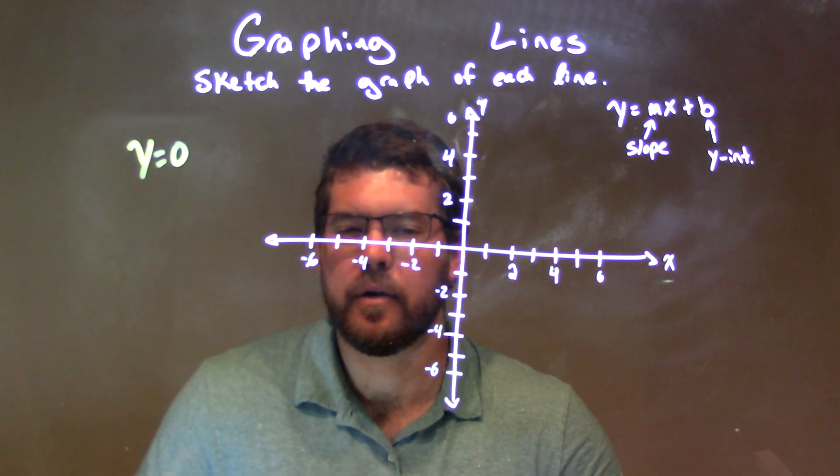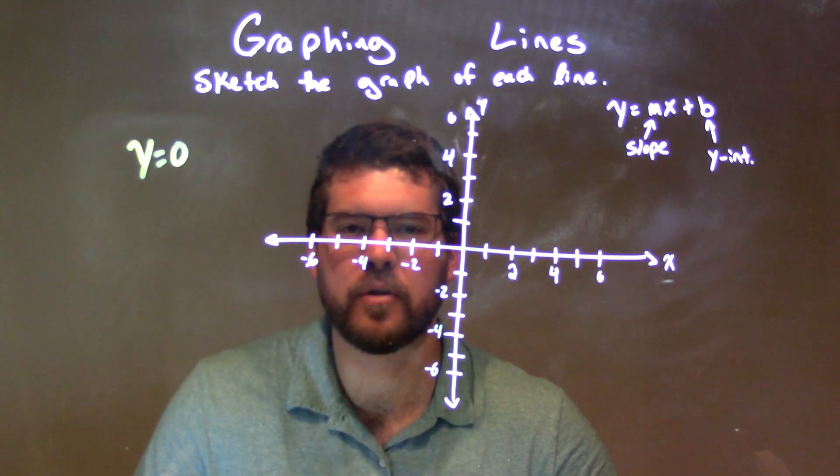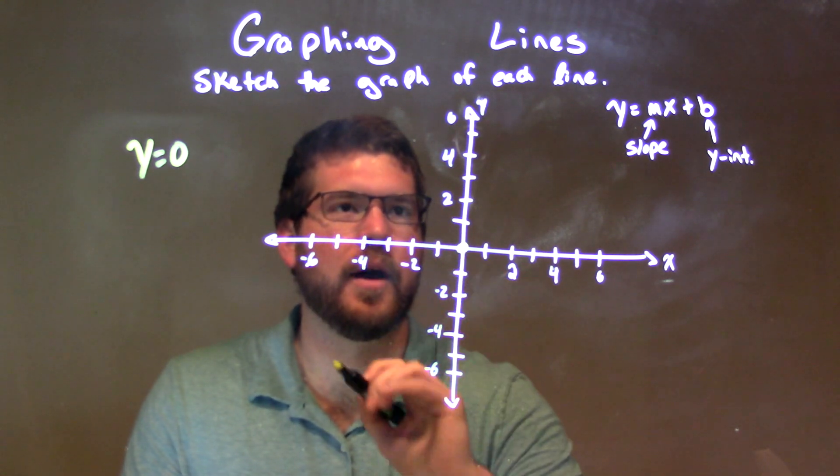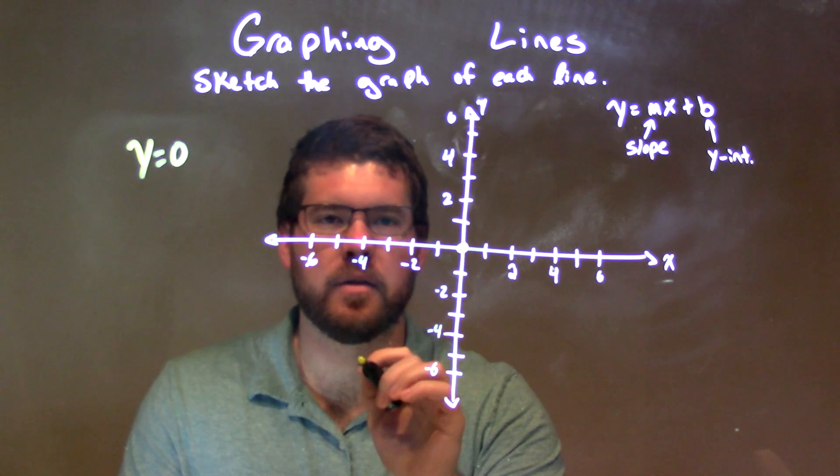Now, we know this is just going to be a horizontal line, right? So we start at the origin, right here. The y-intercept is 0, and it's a horizontal line.